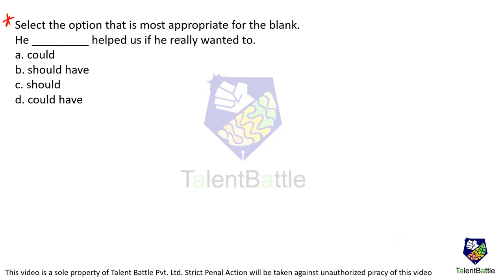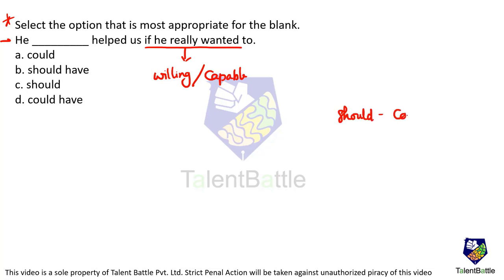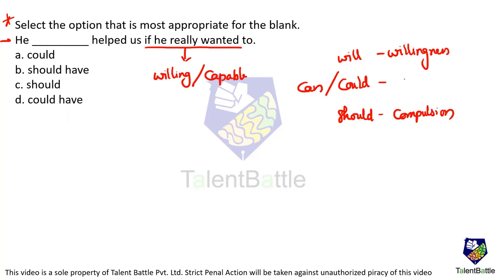Moving on to the next question: select the most appropriate option for the blank. The sentence is 'He ___ helped us if we really wanted to.' The options are: could, should have, should, could have. We can eliminate two options immediately. 'Should' and 'should have' express compulsion, but the sentence is about willingness or capability — not compulsion. So options B and C, which involve 'should,' are eliminated.